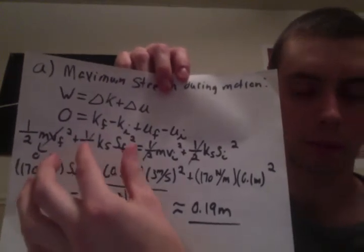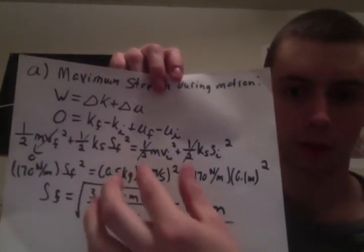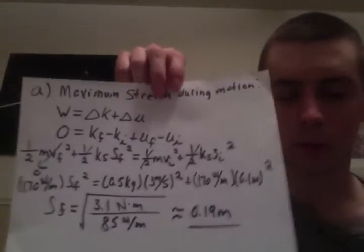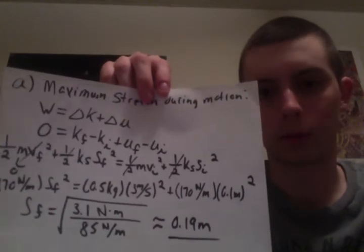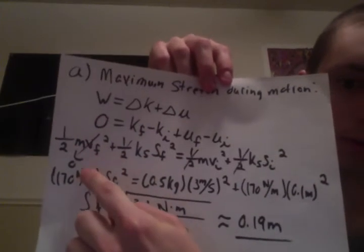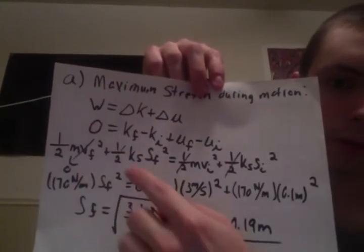At the maximum stretch, we're going to have a final velocity of zero. That's why this final velocity over here goes to zero, and the one-halves cancel out algebraically.